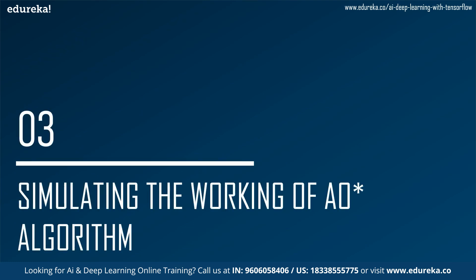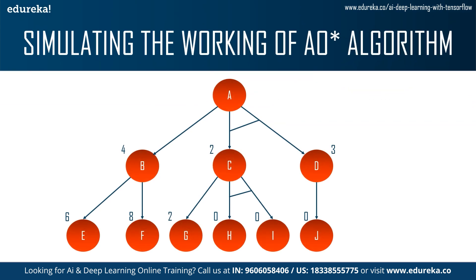Now let us move on to the simulation and working of AO star algorithm. We have a network where you start from node A. From A, you have B, or C and D as a hyper arc. B connects to E and F, C can lead to G, or H and I as a hyper arc, and D connects to J. The numbers next to each node are heuristic costs — for example, the 4 next to B means it will reach the solution with a cost of 4. For a hyper arc like C and D, both must be completed, so their costs are added: 2 + 3 = 5.